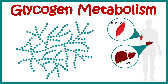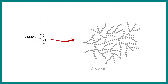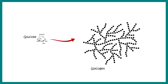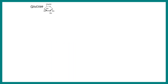In this video we'll talk about glycogen metabolism. Glycogen is a polymer of glucose and it's a complex polysaccharide; it's also branched. In this video we'll look at the synthesis and the breakdown of glycogen.